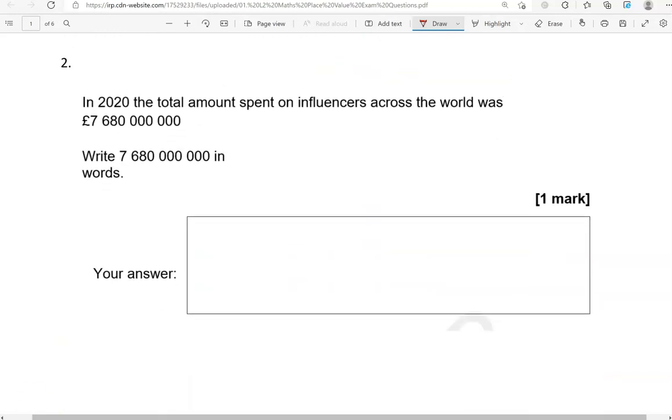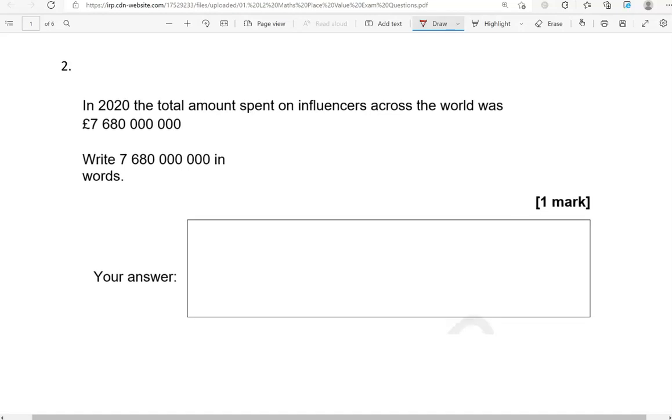In 2020, the total amount spent on influencers across the world was seven billion, six hundred and eighty million pounds. Write 7,680,000,000 in words. So I read the number myself. But of course, when you first look at it, you don't know how to read it, and you don't know how to write it in words. So we'll group them into threes.